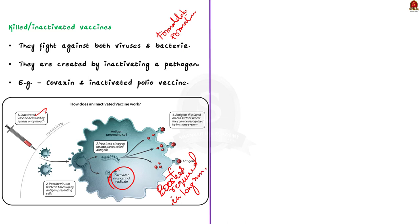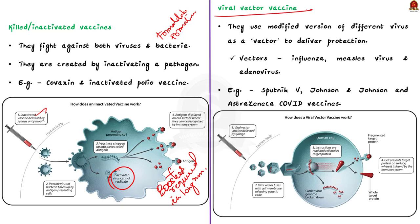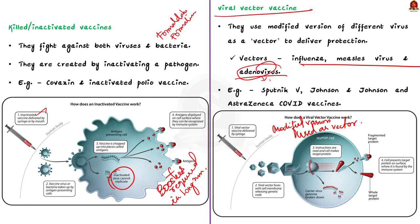Viral vector vaccines use a modified version of a different virus as a vector to deliver protection. Several viruses have been used as vectors, including influenza, measles virus, and adenovirus that causes the common cold. Adenovirus is one of the viral vectors used in some COVID-19 vaccines. COVID vaccines like Sputnik V, Johnson & Johnson's, and AstraZeneca are examples of viral vector vaccines.